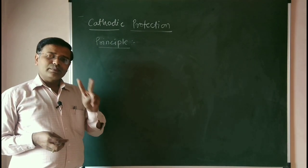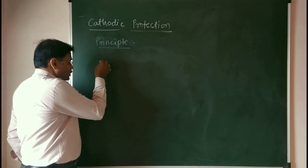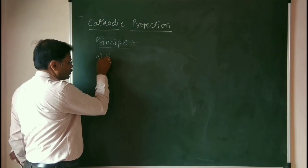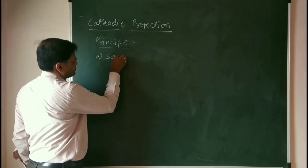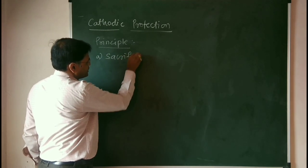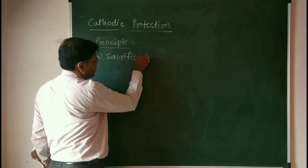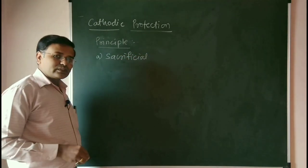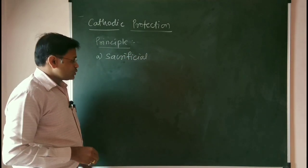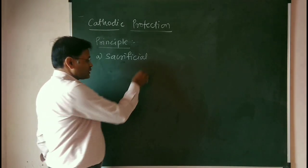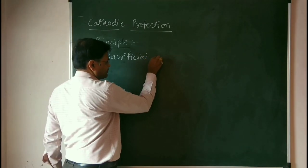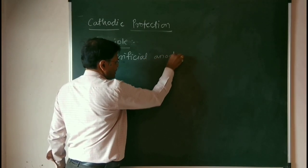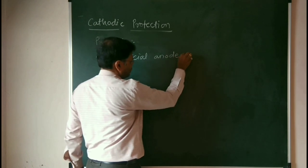Cathodic protection can be achieved by two ways. One is the sacrificial anode method, and the other is the impressed current method. We will see the sacrificial anode method first.